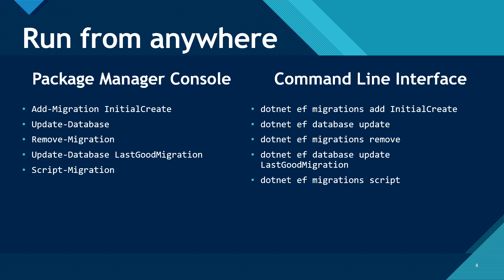So what are all these commands? Add migration and the name of the migration is how you create a migration. Then if you want to apply that migration, you run the update database command. If you do not like that migration, you can also remove the migration — but you can only remove migrations which have not been applied to the database. If you want to revert a migration, you write the name of the last good migration you want to go back to. And you can generate SQL scripts for all your migrations using the script migration command. These are command line interface commands, so you can run them from Linux, Mac, VS Code, JetBrains, or any IDE that you're using.